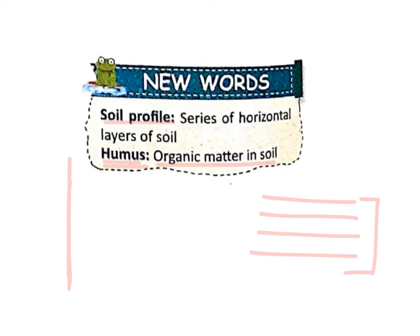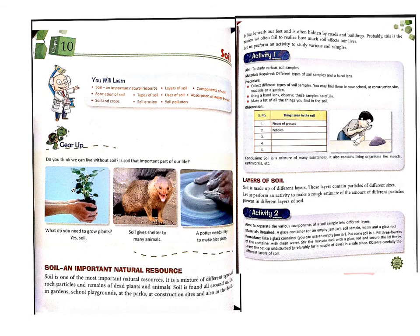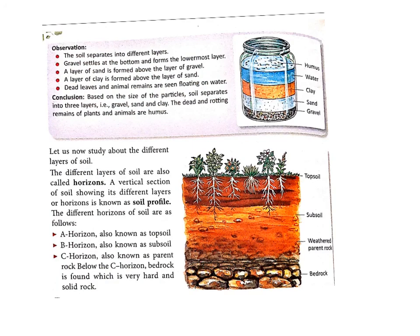Children, in the next video we will study the horizons in detail. Let's recap. In this video, we studied that soil is an important natural resource. We did an activity in which we observed different types of soils. Then we studied about layers of soil — for that we also performed an activity. Then we learnt about different layers of soil: topsoil, subsoil, parent rock, and below all these layers we have bedrock.